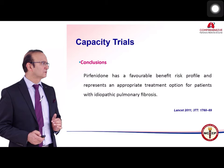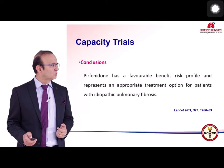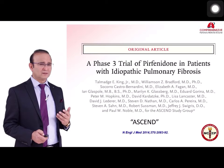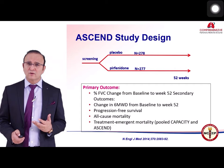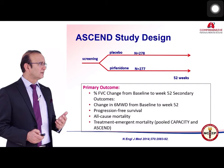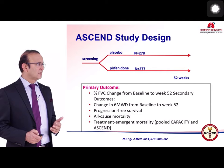The conclusion from the CAPACITY trial was that pirfenidone has a favorable benefit-risk profile and represents an appropriate treatment option for patients with idiopathic pulmonary fibrosis. This led to the ASCEND trial, a phase 3 trial of pirfenidone in IPF patients, published in 2014, with 278 patients in the placebo arm and 277 in the pirfenidone arm, followed for 52 weeks.